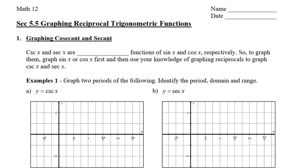These functions are the reciprocal of sine x and cosine x, respectively. To graph them, it is convenient to graph sine or cosine first, and then we're going to use our knowledge of graphing reciprocals to graph cosecant and secant. So let's take a look at how to graph cosecant.